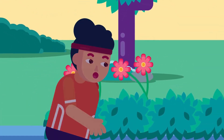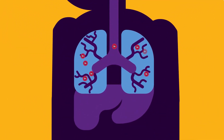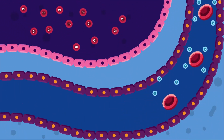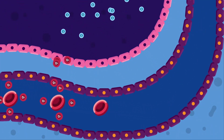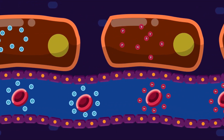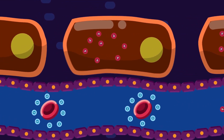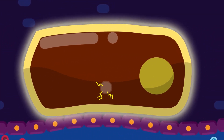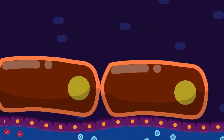Breathing is the process of moving air into and out of the lungs to facilitate gas exchange with the internal environment. This brings in oxygen from the air and flushes out carbon dioxide. Internal respiration is the exchange of substances between blood and cells, whereas cellular respiration is the release of energy from food substances in living cells.